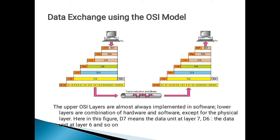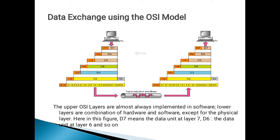This is how data is exchanged using the OSI model. The upper OSI layers are almost always implemented in software. Lower layers are a combination of hardware and software, except for the physical layer which is almost always implemented in hardware. In this figure, D7 means the data unit at layer 7, D6 the data unit at layer 6, and so on.